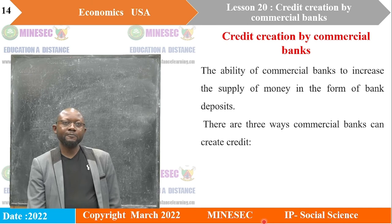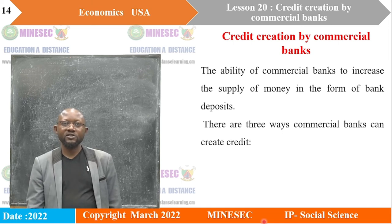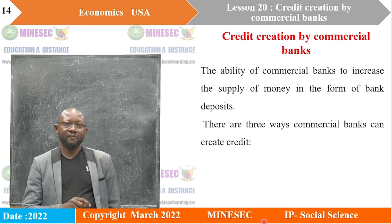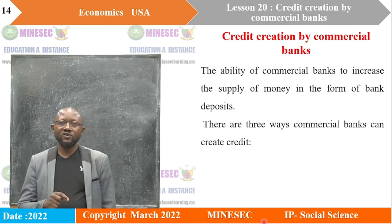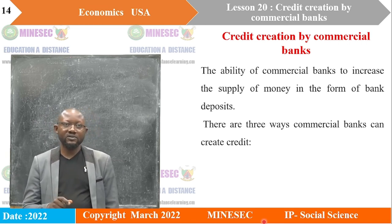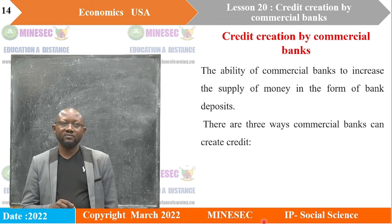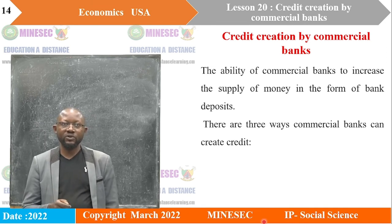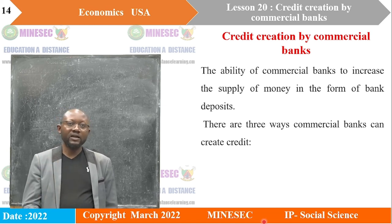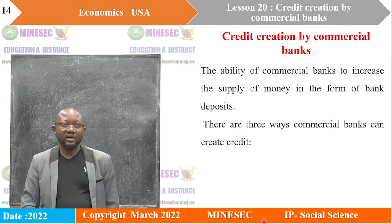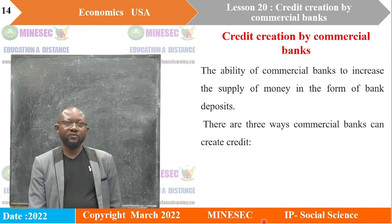We'll start the lesson by defining credit creation, which is the ability of commercial banks to increase the supply of money in the form of bank deposits. Remember, we have three modern forms of money: coins, bank notes, and bank deposits — money kept in sight deposit accounts that can easily be withdrawn using checks. When commercial banks create more bank deposits, they are equally increasing the supply of money.